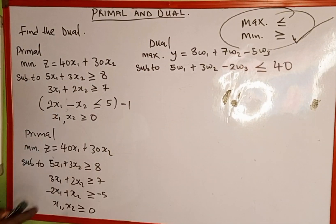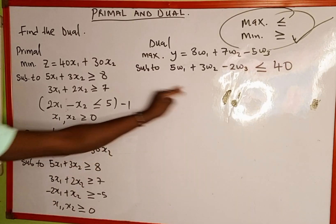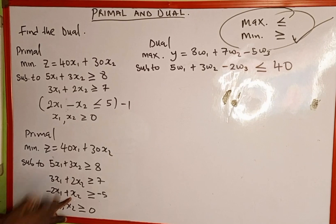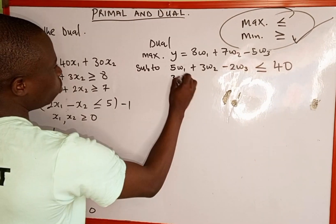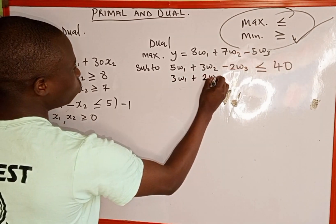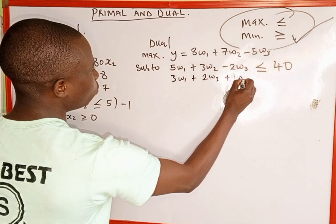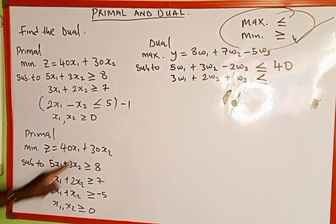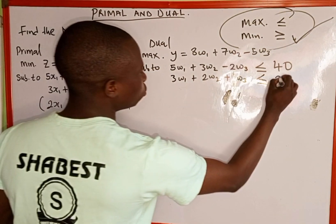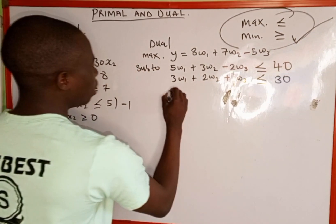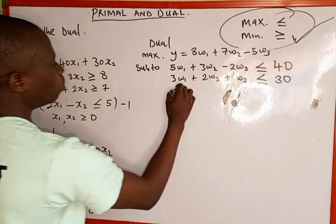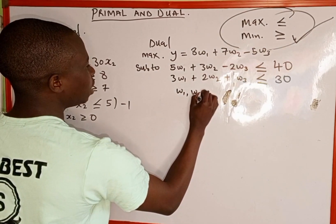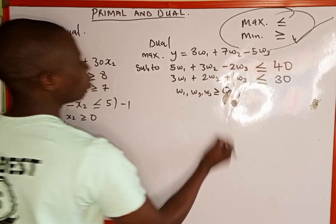To get the second dual constraint, we use the second column — the coefficients of x2: 3, 2, and 1. So we have 3W1 plus 2W2 plus W3 less than or equal to 30. We have three variables W1, W2, W3, and they are all greater than or equal to 0.